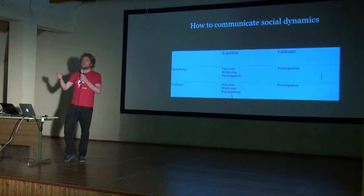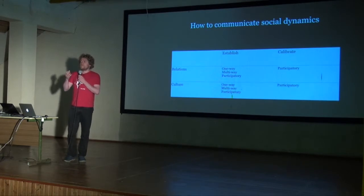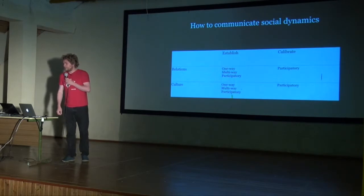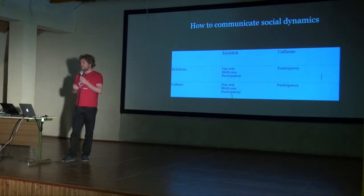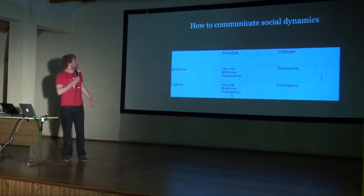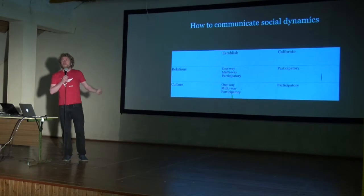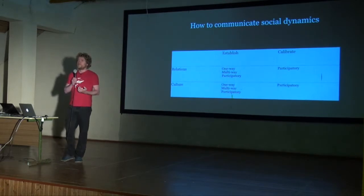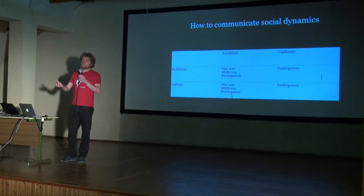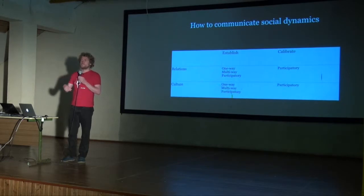We need to have mutual understanding — people need to understand it both ways. It doesn't matter if I portray a character that is really afraid of you if you don't really understand that this is part of our dynamic. These social phenomena, I believe, should be communicated through co-creative communication. You might very well use one-way or multi-way communication to establish relations and culture, but I think it's necessary to use participatory methods to calibrate it. If you use participatory methods to create it as well, as Christopher said, you can integrate the calibration into the creation.